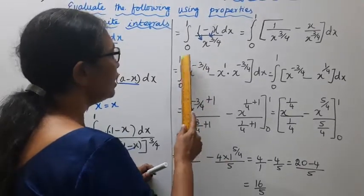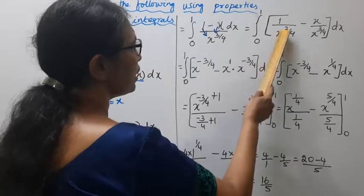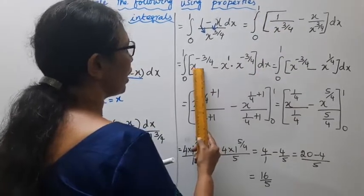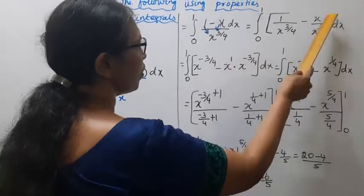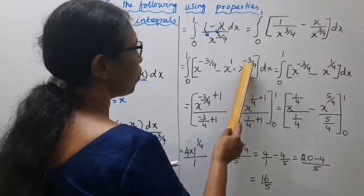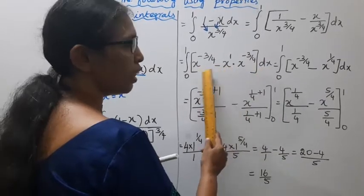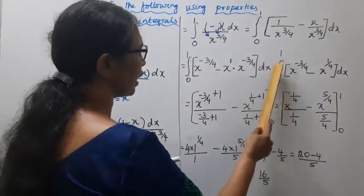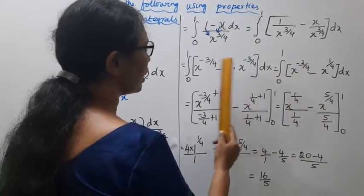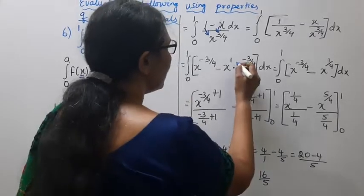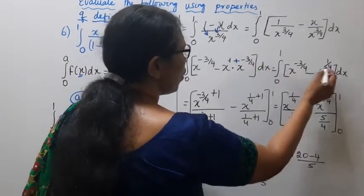Now integrating 0 to 1 of 1 by x^(3/4) dx, which equals 0 to 1 of x^(minus 3/4) dx. Using the power rule: integral of x^n dx equals x^(n+1) divided by (n+1). Here n equals minus 3 by 4.